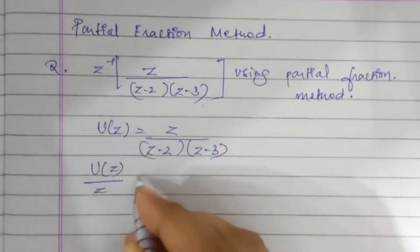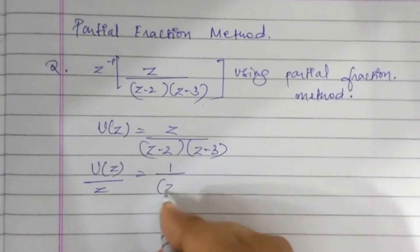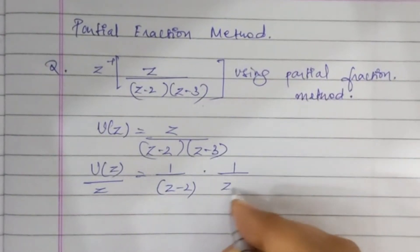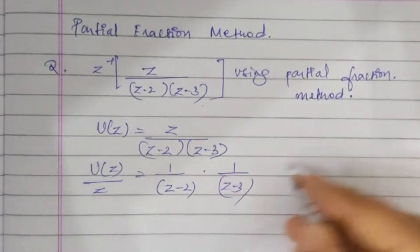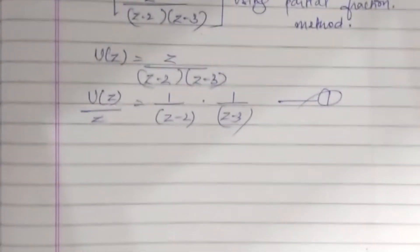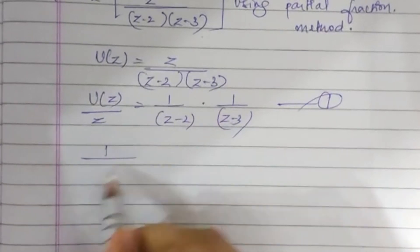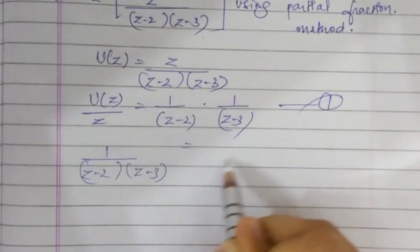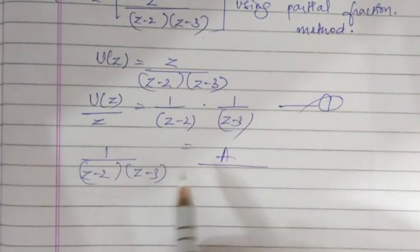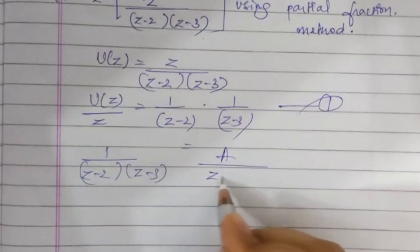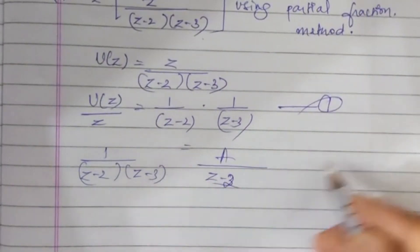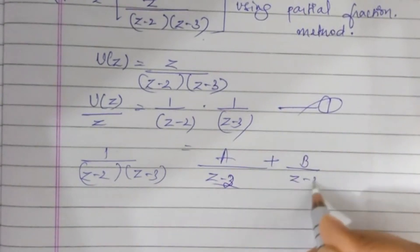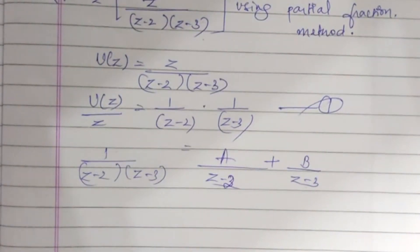Taking Z to the other side, U(Z) divided by Z equals 1 divided by (Z minus 2) into (Z minus 3). This is our first equation. Now we apply partial fractions: 1 divided by (Z minus 2)(Z minus 3) equals A divided by (Z minus 2) plus B divided by (Z minus 3).